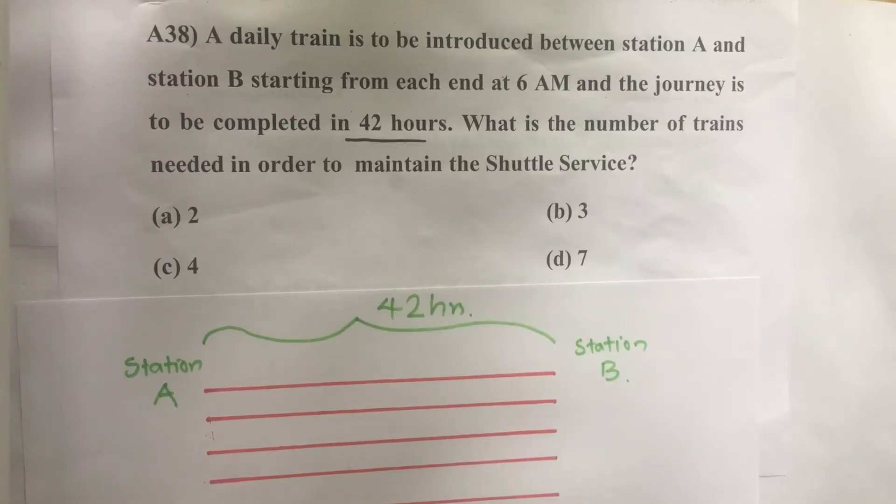Hello everyone, here I am going to solve 2016 CSAT question number 38 from question paper series A. A daily train is to be introduced between station A and station B starting from each end at 6 AM, and the journey is to be completed in 42 hours. What is the number of trains needed in order to maintain the shuttle service?